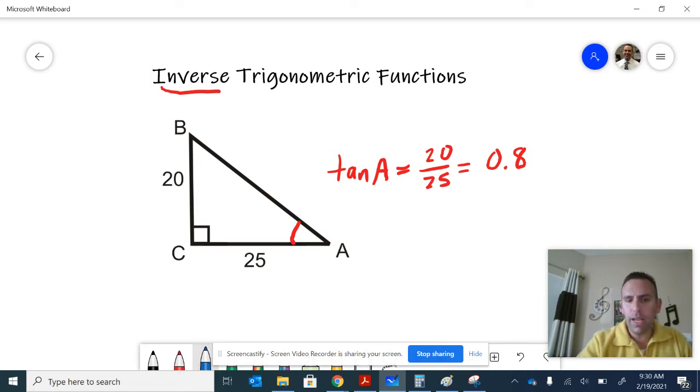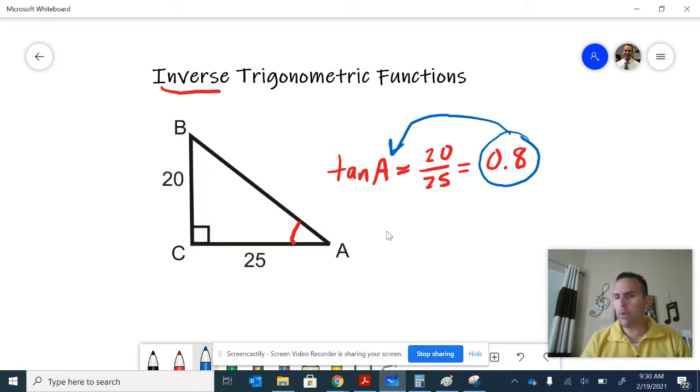However, there is a feature on our calculators that we can use that takes us backwards. Since it's memorized all of the trigonometric ratios, it can undo them. We can go from here backwards to figure out what the value of A is. Let's first take a look at how we write this notation-wise, and then we'll look at an example with a calculator.